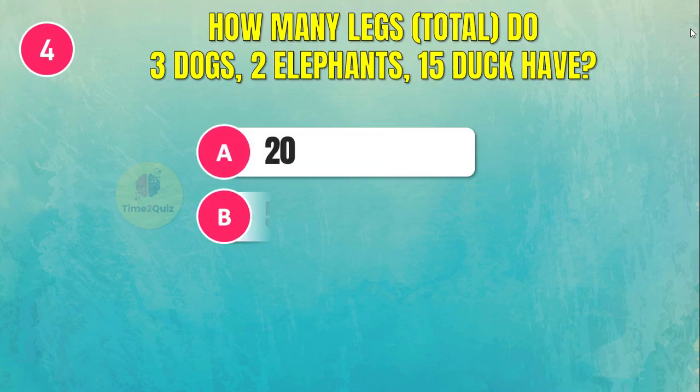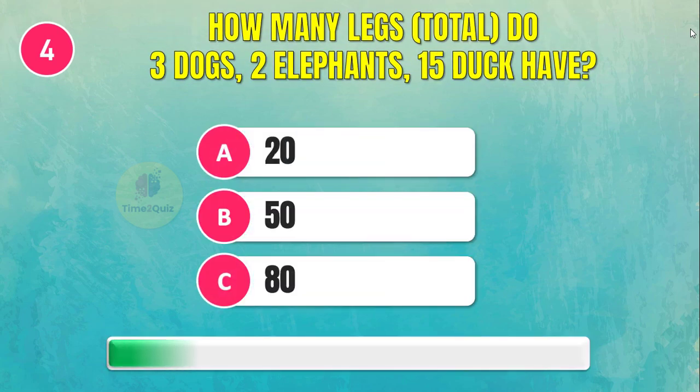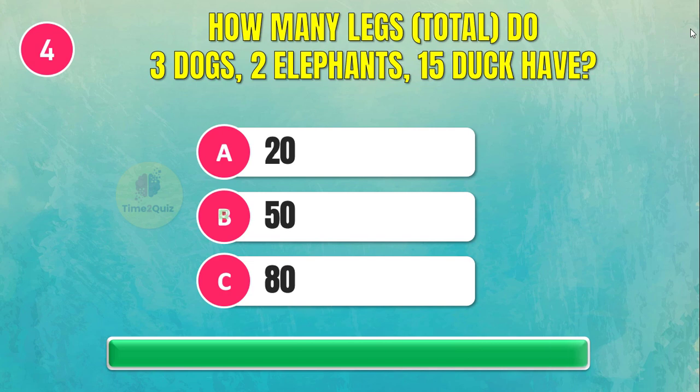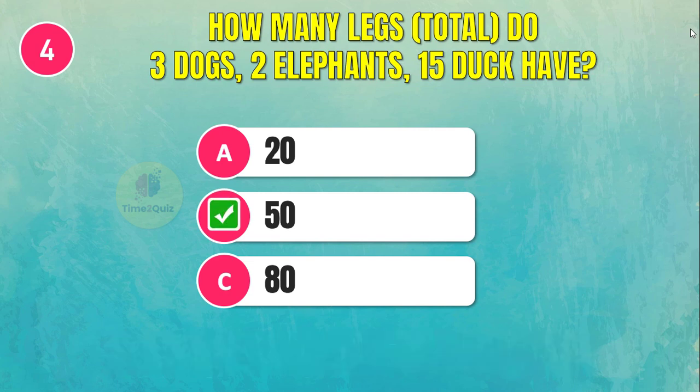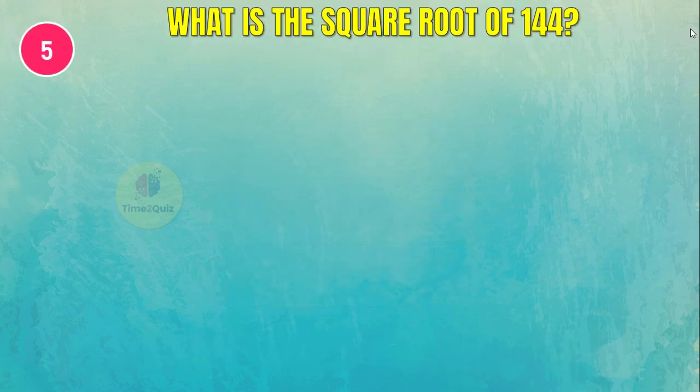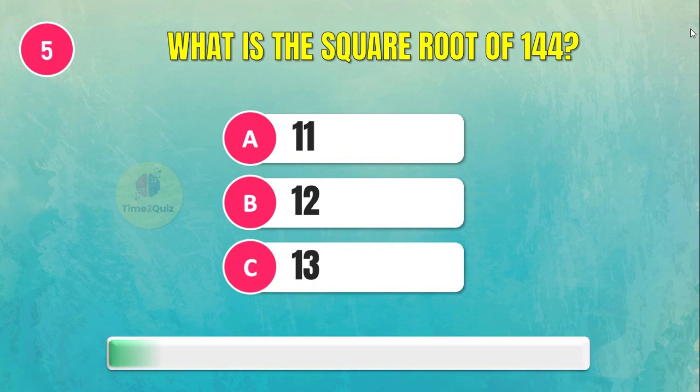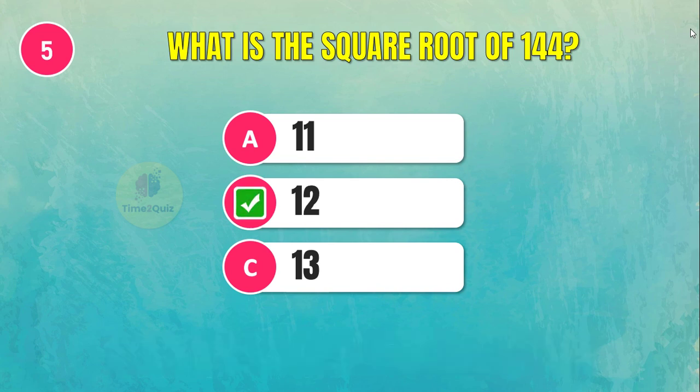How many legs total do three dogs, two elephants, and 15 ducks have? The answer is 50. What is the square root of 144? The answer is 12.